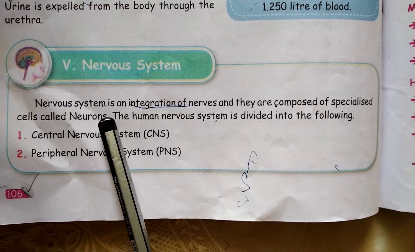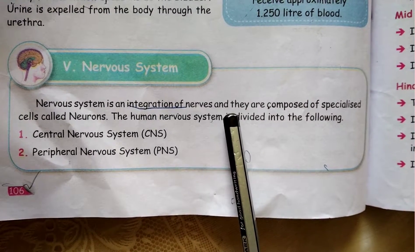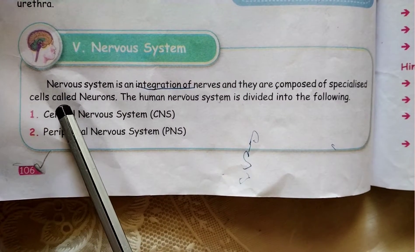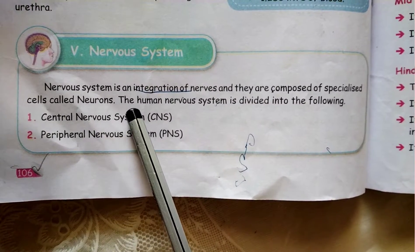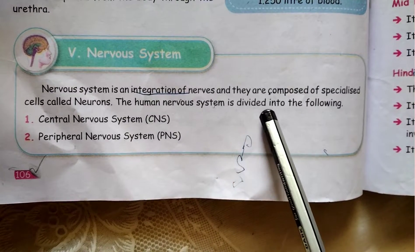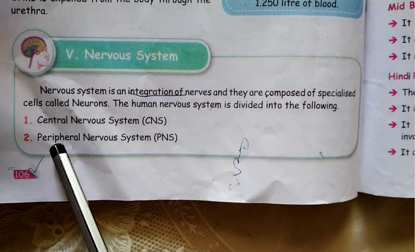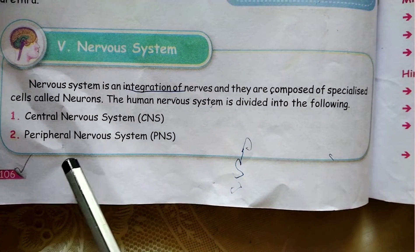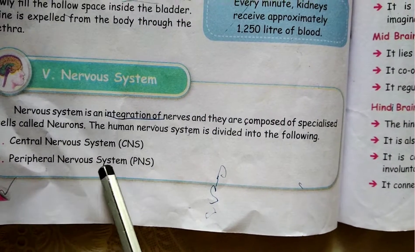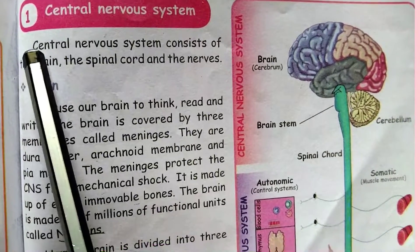The nerve system is an integration of nerves and they are composed of specialized cells called neurons. The human nerve system is divided into the following: Central Nerve System (CNS) and Peripheral Nerve System (PNS).